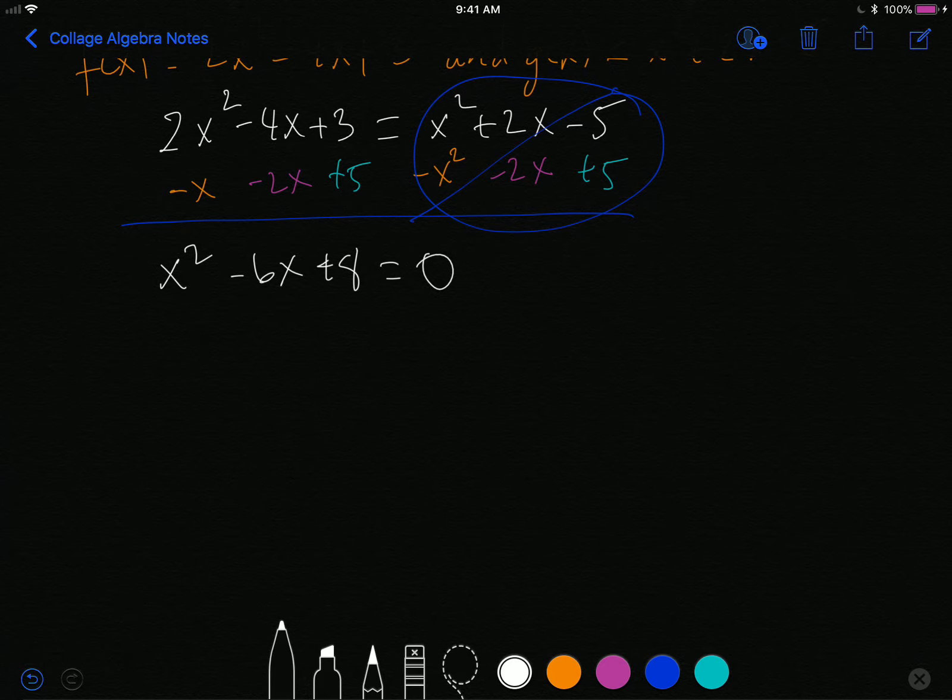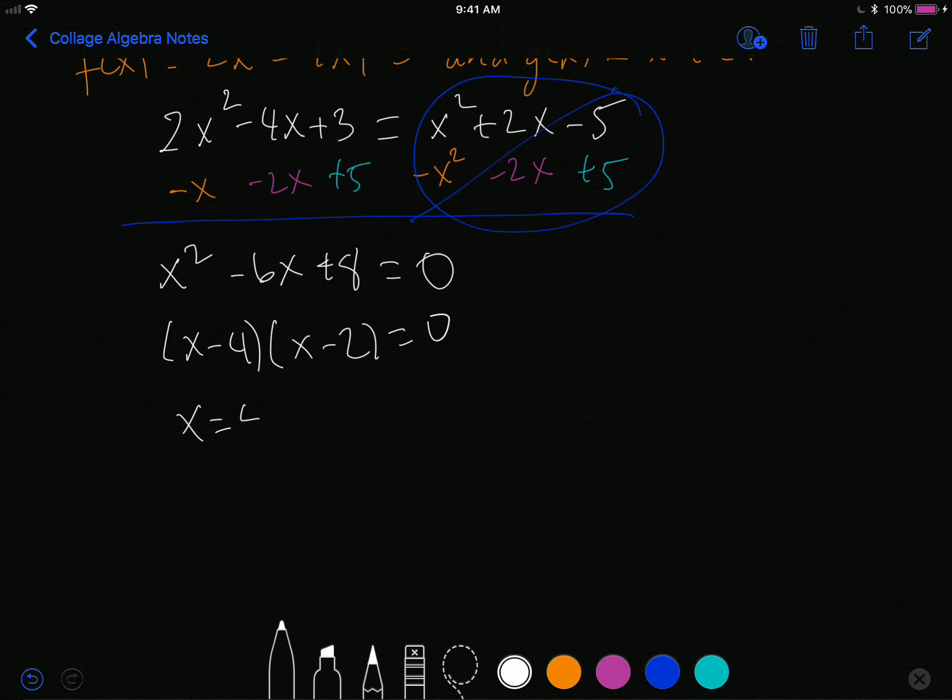Again, all of these examples are chosen so that they factor nicely because factoring is the fastest way to solve. But you could use the quadratic formula, you could complete the square. And to get to the answer, this factors into x minus 4 times x minus 2 is 0. And so I get x is equal to 4 and x is equal to 2.